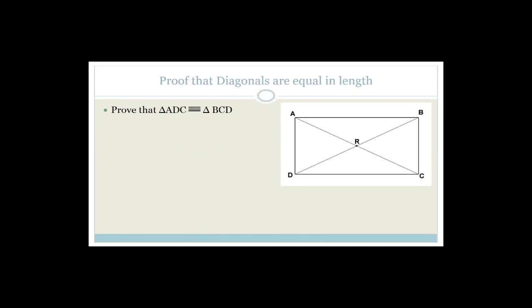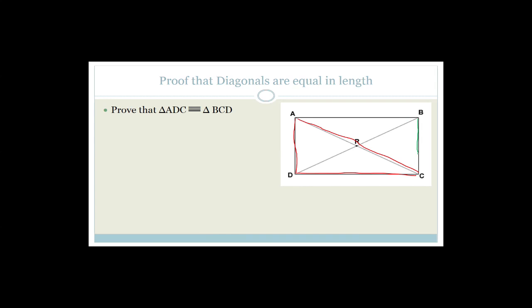Now we are going to use congruency to prove that the diagonals are equal in length. We're going to look at triangle ADC and triangle BCD, and prove that these two triangles are congruent. If we can do that, then we'll know that AC is equal to BD, and therefore the diagonals in a rectangle are equal in length.